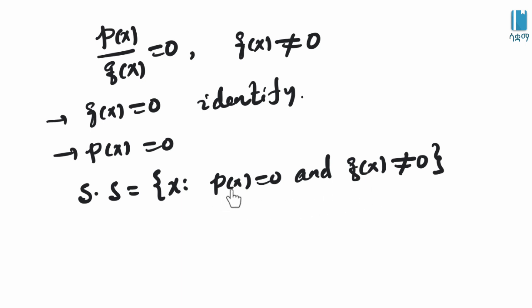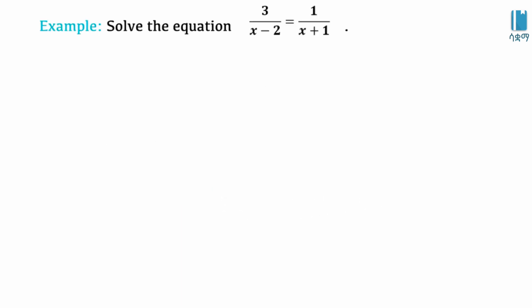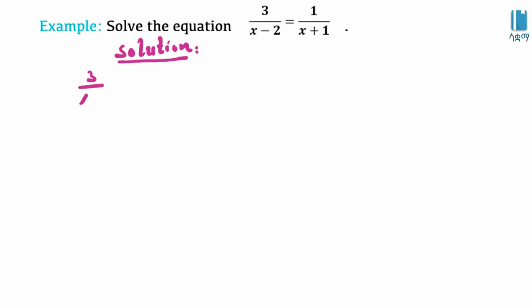So this is how we solve 3 over x minus 2 equal to 1 over x plus 1. This is the rational equation, and this is how we solve the expression.